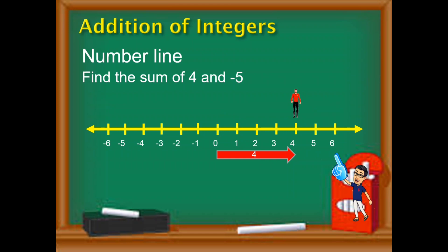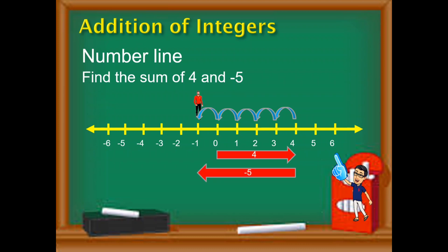Next, we add negative 5. Since it is negative, you need to move to the left side. From 4, move left — 1, 2, 3, 4, 5 — representing negative 5. From 4, you have reached negative 1, and that is your last position. So, 4 plus negative 5 is equal to negative 1, because negative 1 is your last position.